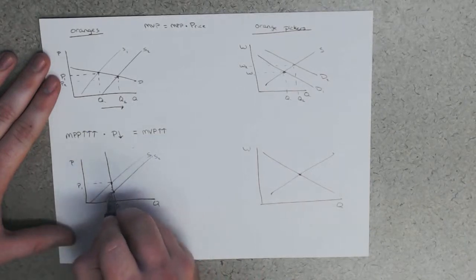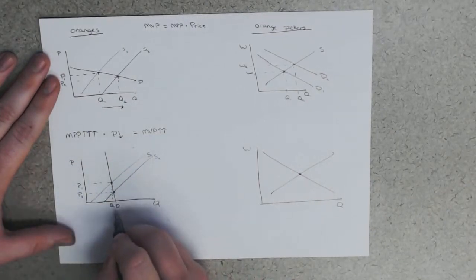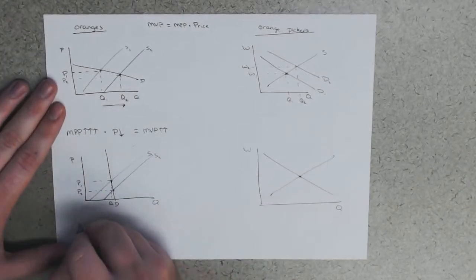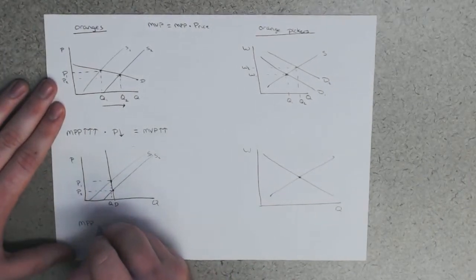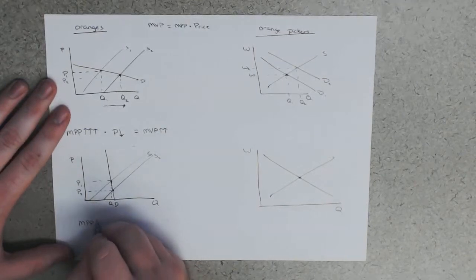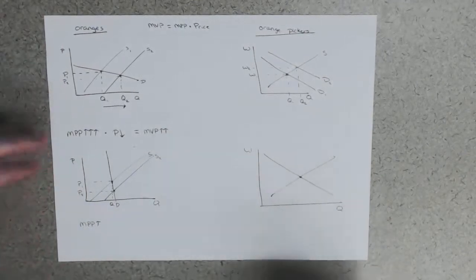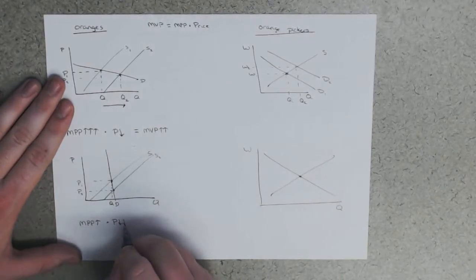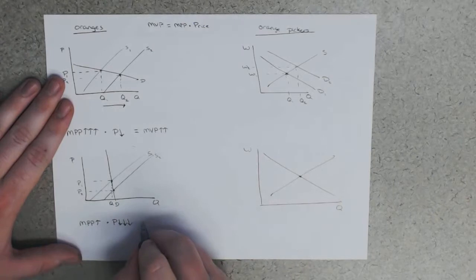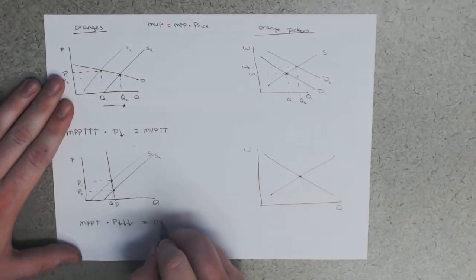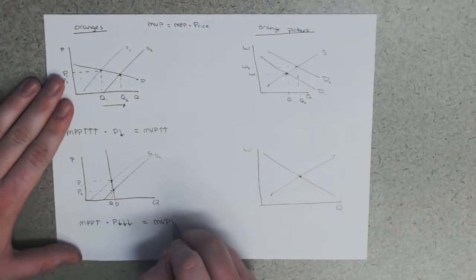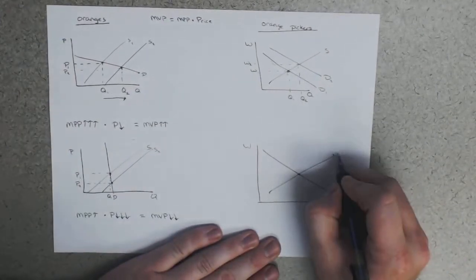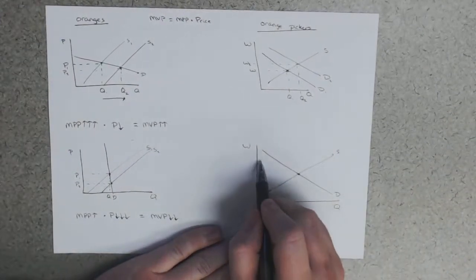Same exact labor market as before. Here, if there's an increase in technology, the price drops by a lot and the quantity changes by so much I can't actually even fit it on here. MPP increased, so the worker is more productive per hour, but price has decreased by a significant amount.